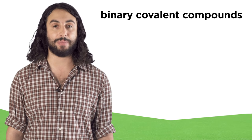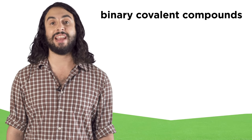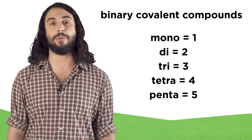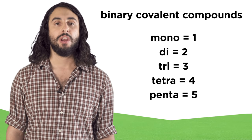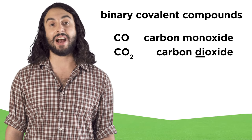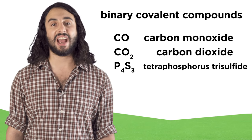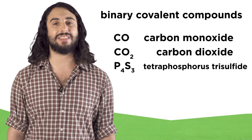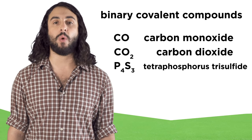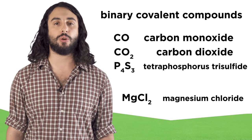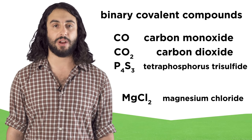If we are looking not at ions but at binary covalent compounds, which contain only two elements, we use a different set of prefixes to say how many atoms of each element there are. We can have carbon monoxide, or carbon dioxide, or something like tetraphosphorus trisulfide. These prefixes are not necessary when there is only one possible combination between two elements, so it's just magnesium chloride, not magnesium dichloride.